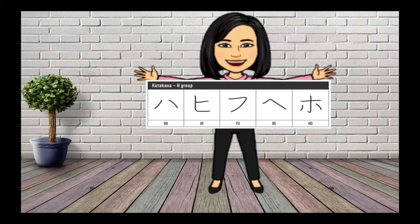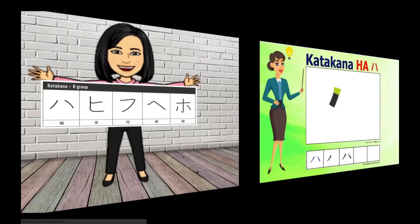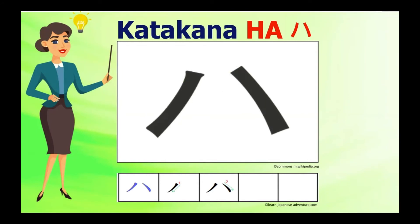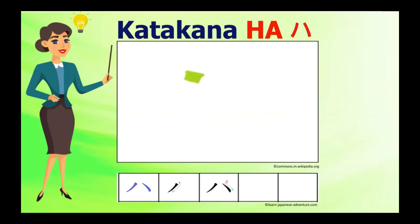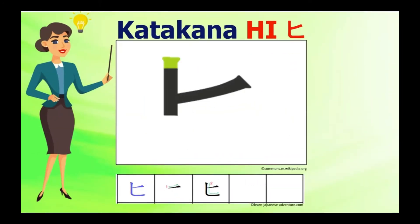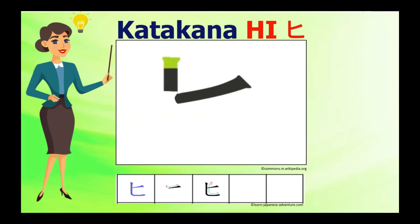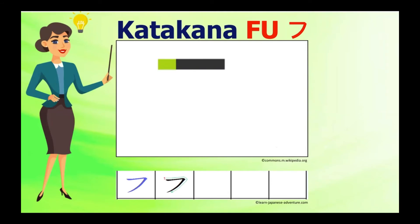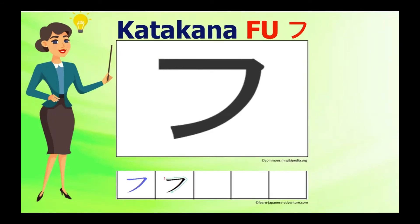Next is the katakana H group: ha-hi-fu-he-ho. Katakana Ha is very easy to write and remember since it looks like the two laugh lines on our face when we laugh. Katakana Hi looks like a small letter T of the Roman alphabet; however, the second stroke should not form a cross with the first stroke. Katakana Fu — remember, it is not 'Hu' even if it belongs to the H group. Note that it looks like katakana U but there's no line on top of it.